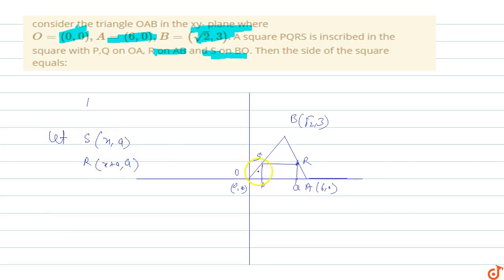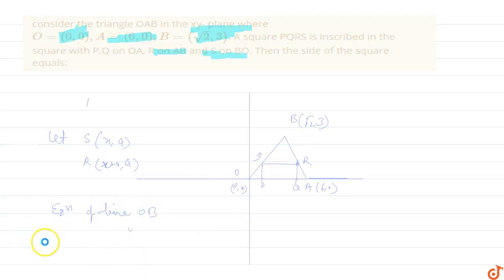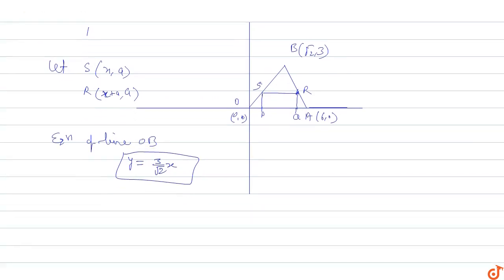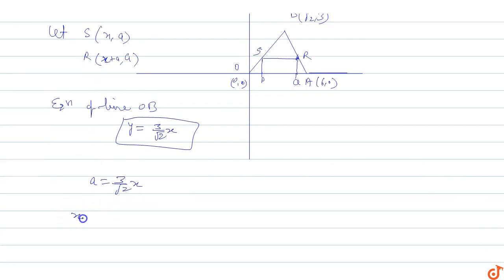Since S lies on line OB, the coordinates (x, a) satisfy y = (3/√2)x. Substituting, we get a = (3/√2)x, which gives x = (√2/3)a. This is Equation 1.